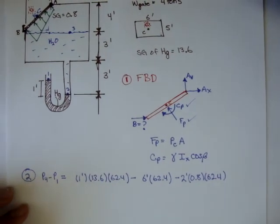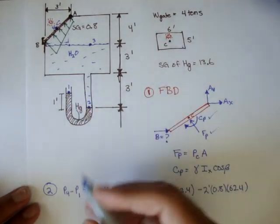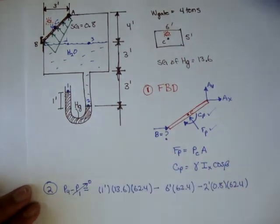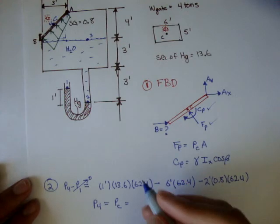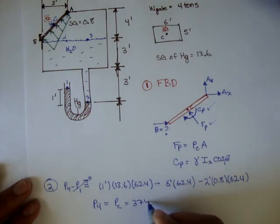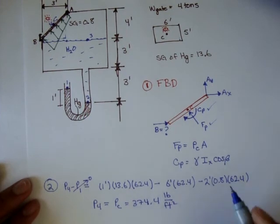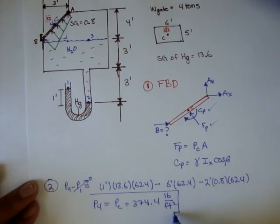And, if we solve this out, the pressure at one is open to a free surface, so we know that is zero. So, the pressure at four, or the pressure at the centroid, is going to be equal to 374.4 pound per foot squared.